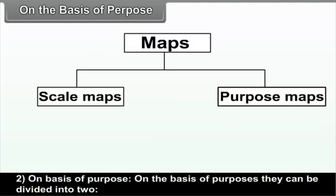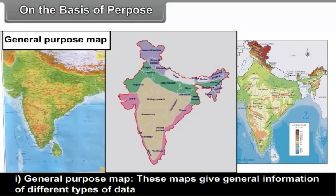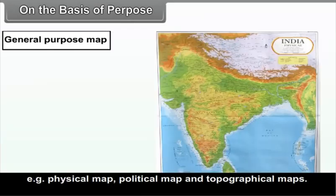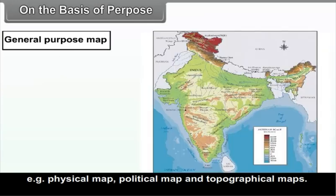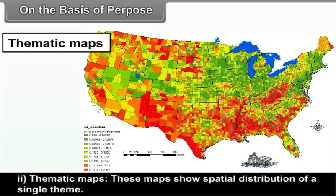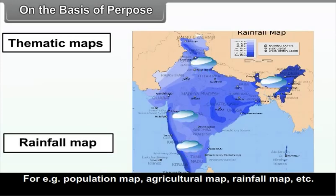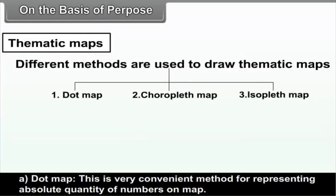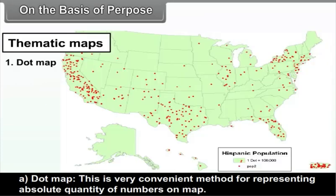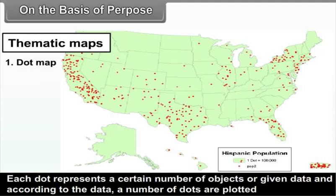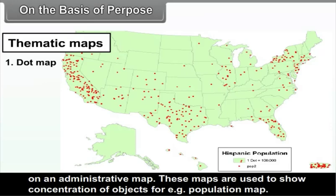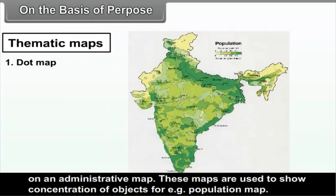On the basis of purpose, maps can be divided into two types. A. General purpose maps give general information of different types of data — for example, physical map, political map, and topographical maps. B. Thematic maps show spatial distribution of a single theme — for example, population map, agricultural map, rainfall map, etc. Different methods are used to draw thematic maps. The dot map is a convenient method for representing absolute quantities: each dot represents a certain number of objects, and dots are plotted on an administrative map to show concentration, for example a population map.